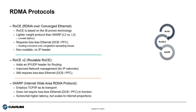iWARP is the third type of RDMA in use today and runs over standard Ethernet topology without requiring lossless connectivity. This makes it more suited for scalable environments. However, the latency is slightly higher than the RoCE implementations as a result.